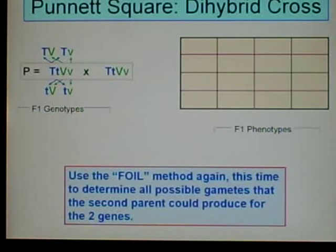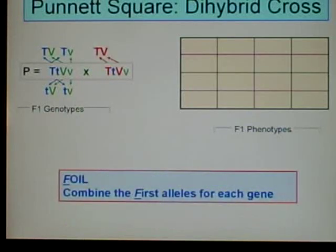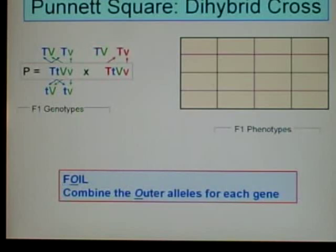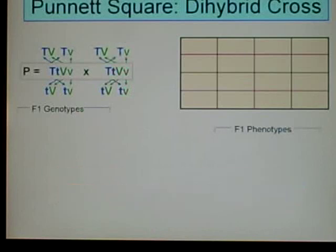Now we use the FOIL method again, this time to determine all possible gametes that the second parent could produce for the two genes. We'll go through this quicker. Under FOIL, we do the first, the outer, the inner, and the last, and we end up with those.